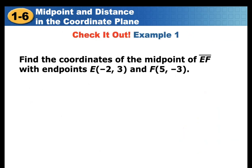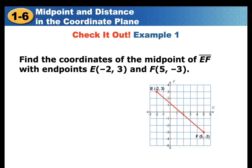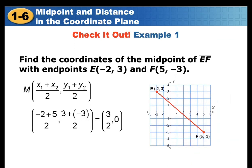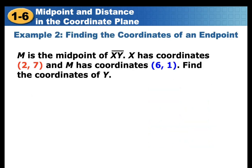Second example: find the coordinates of the midpoint of line segment EF with endpoints E(-2, 3) and F(5, -3). You can plot the points on a graphing paper. Solving with the formula: (-2 + 5)/2 and (3 + (-3))/2 gives coordinates of 3/2 and 0.